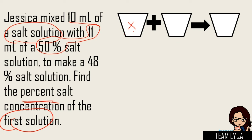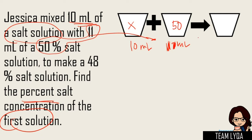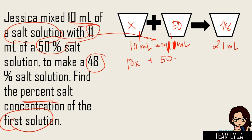Same concept again, same picture — i-fill in lang natin yung information na binigay. Ang sabi, meron kang 10 ml ng salt solution na hindi natin alam kung ano yung percentage ng concentration, at meron kang 11 ml ng 50% salt solution. In order to solve it, you can put x here kasi ito hindi natin alam — hinahanap yung percent salt concentration of the first solution. Kung ano yung hinahanap siya yung x. So meron kang x percent, pero alam mo na ito ay 10 ml. Yung end result binigay — sabi 48% siya, so 48% na salt solution. Ipagsasamahin mo lang itong dalawa para makuha yung total na ml — that is 21 ml. So magiging: 10x + 50 × 11 = 48 × 21.